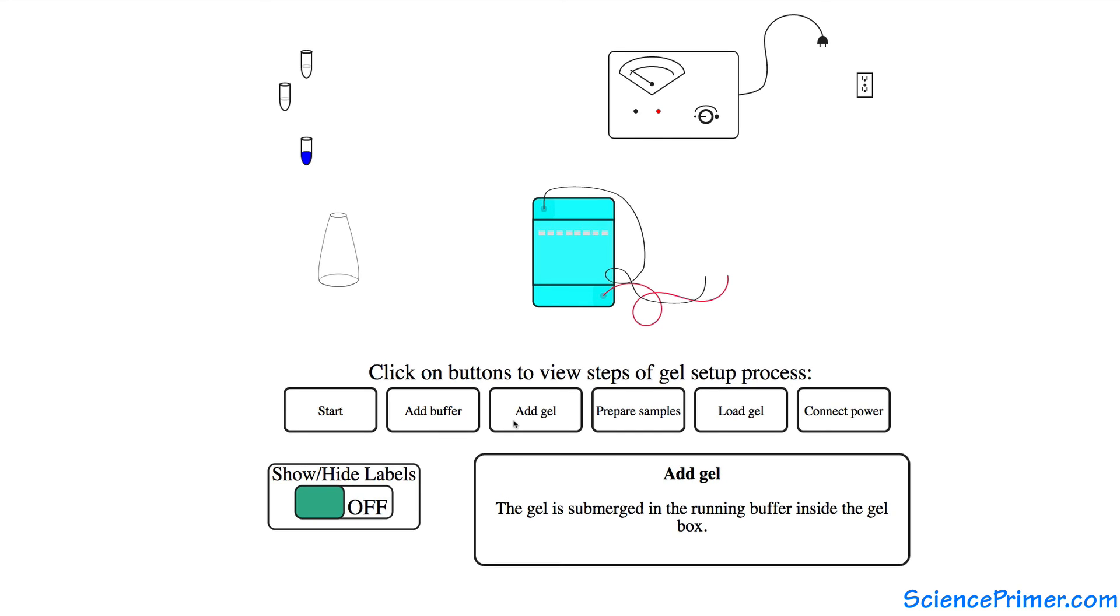Place the gel in the gel box, making sure the gel is completely submerged in the buffer and that the wells are oriented properly. That is closest to the negative, usually black, electrode.